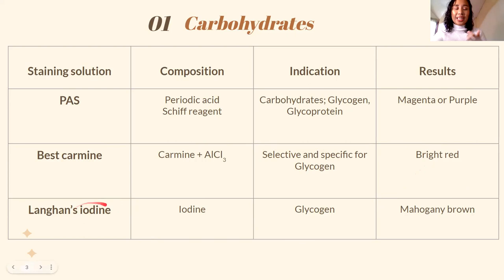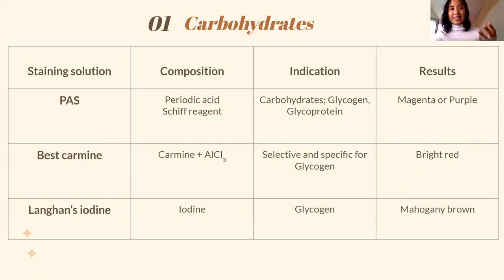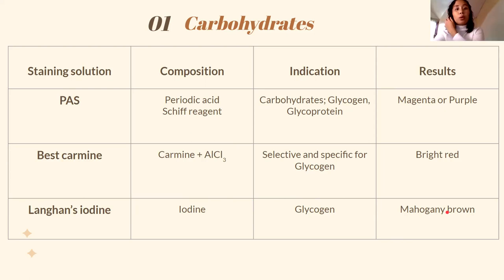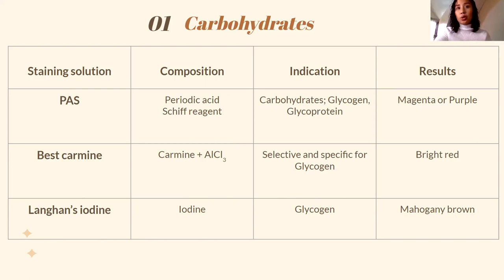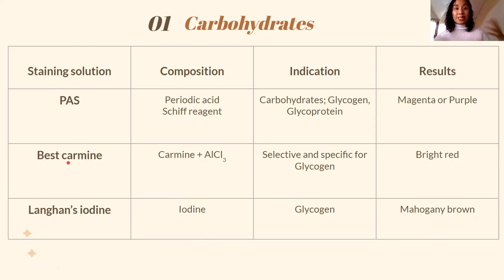When you hear iodine, it is good for starch. Starch is the storage form of carbohydrates in plants, while glycogen is the storage form in animals. Lugol's iodine stains carbohydrates dark brown to black when it comes in contact with glycogen or starch. However, Lugol's iodine is non-specific — not only for glycogen. So the best stain specifically for glycogen remains Best Carmine.